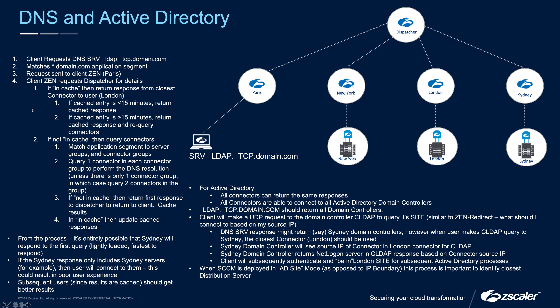Let's run through what happens with a wildcard application segment for star.domain.com. When the user does a DNS SRV lookup for _ldap._tcp.domain.com — asking for the details of the LDAP service on TCP in the domain.com domain — the wildcard domain will match an application segment. The client sends the request through its tunnel to the Paris ZEN it's connected to.